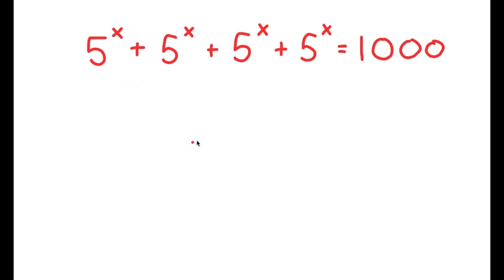In this problem, I have 5 to the power of x plus 5 to the power of x plus 5 to the power of x plus 5 to the power of x is equal to 1000.